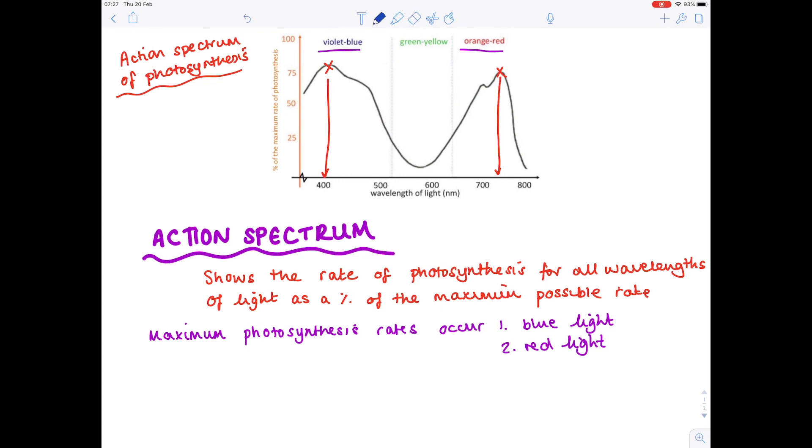Something else we can see from the graph is where photosynthesis rates are lowest. So that's this point on the graph which corresponds to the green-yellow colour. So let's write that minimum photosynthesis rates occur in green-yellow light. But it's important to notice that some photosynthesis is still taking place here. After all that graph line doesn't actually reach zero.